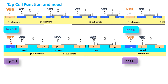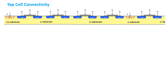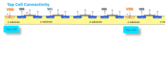The tap cell will have a separate terminal. This is the full tap cell configuration where both the nMOS substrate connection and the pMOS substrate connection exist. They can also be present individually. Here you can figure out how the tap cell connectivity exists.